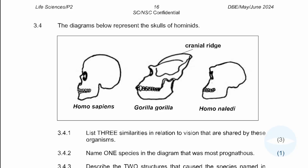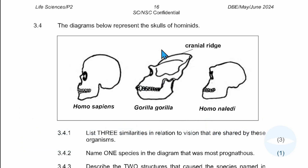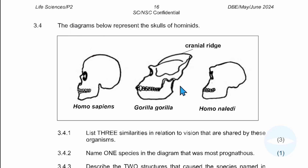Hello Grade 12s, welcome back to our channel. My name is Vile Nengosi. In this video I will be looking at the previous question paper. The paper is based on human evolution, written in May/June 2024 for people who were upgrading. It is for Life Sciences Paper 2. This is the paper — as you can see, here is the diagram and the questions.